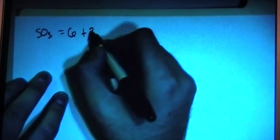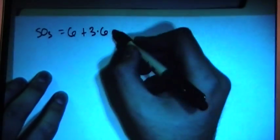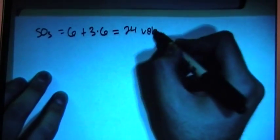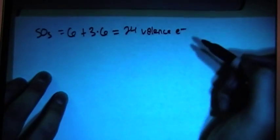SO3, which is the chemical formula for sulfur trioxide, is going to give us 6 valence electrons from the sulfur plus 3 oxygens, each giving us 6 valence electrons. That's a total of 24 valence electrons.